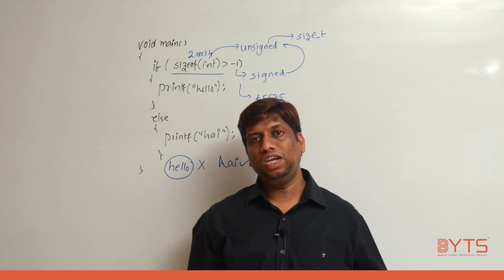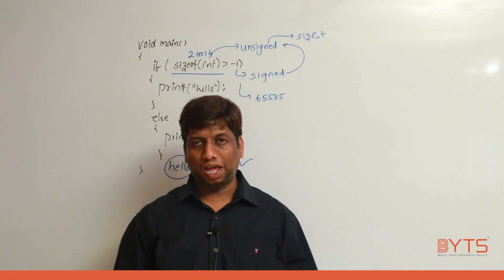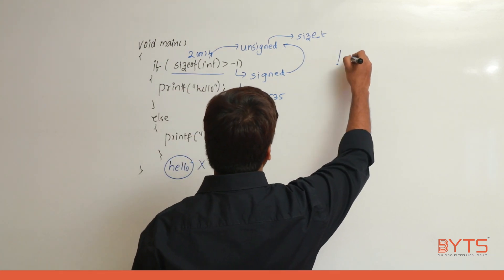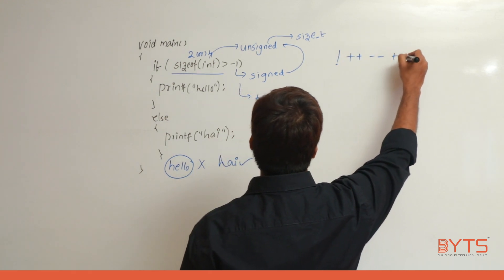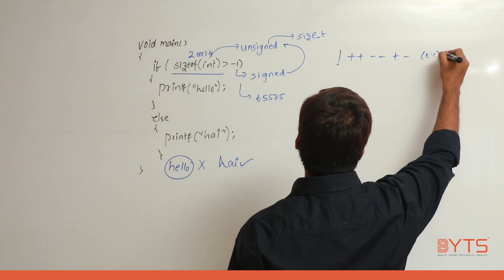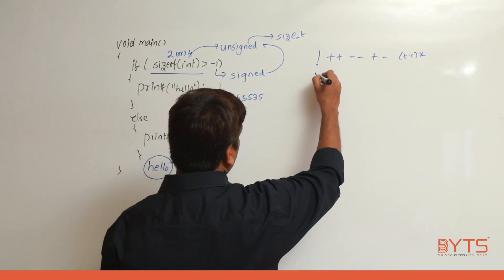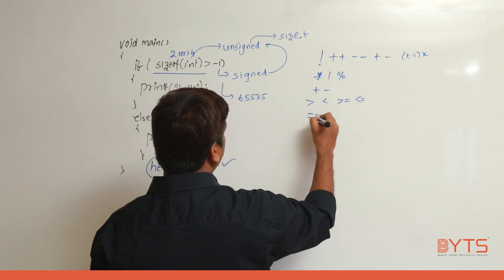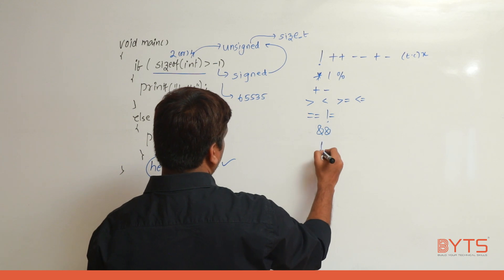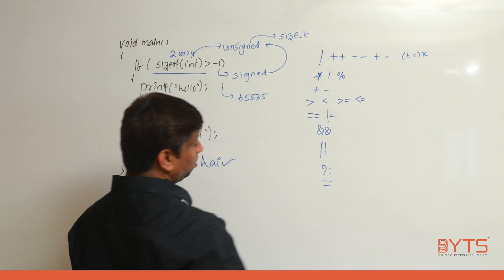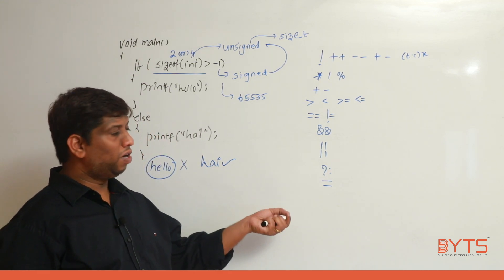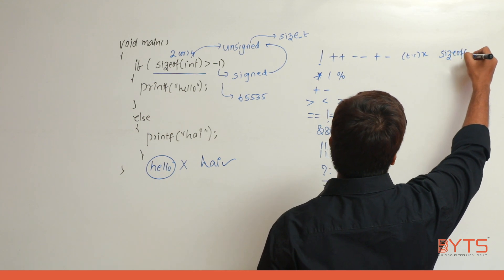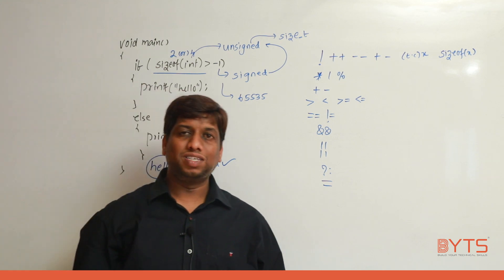Finally, the priority of sizeof: sizeof falls at the second priority level — same as increment/decrement, unary plus/minus. The full precedence order is: NOT → increment/decrement/unary/sizeof → type cast → multiplication/division/modulus → addition/subtraction → relational operators → equality operators → logical AND/OR → conditional → assignment. With this, we have completed the sizeof operator.